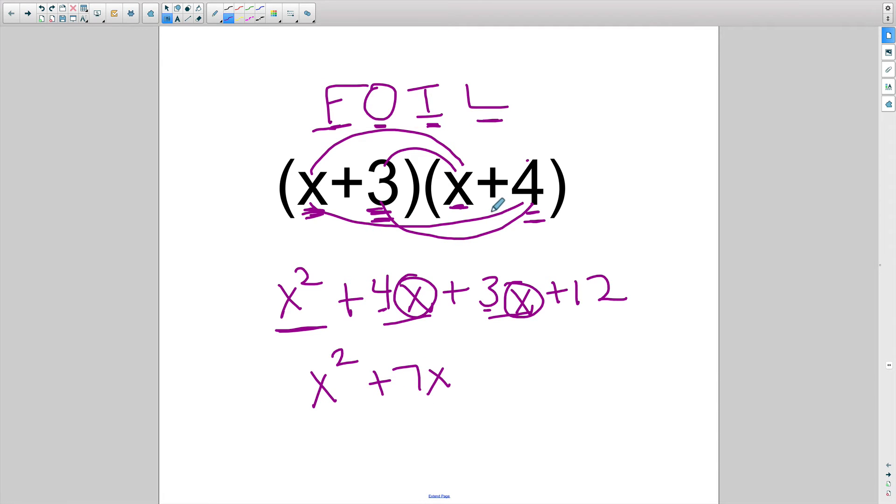Remember, we're not multiplying like we did up top. Up top we multiplied because we're distributing. Down here I'm just adding a positive 4x and a positive 3x, which is going to give me a positive 7x. And then finally I have this last thing at the end here, a 12. It's just an integer attached to nothing. There are no other just plain old integers in the equation. So that's just going to simply be brought down like this. And my answer is x squared plus 7x plus 12.